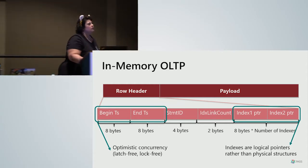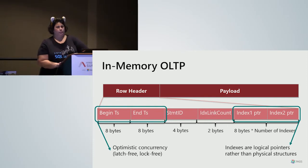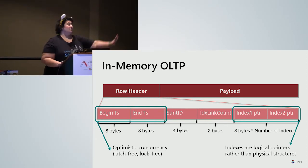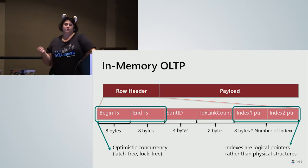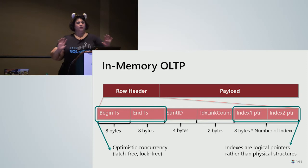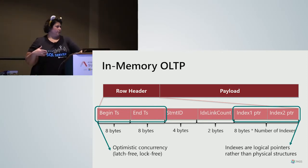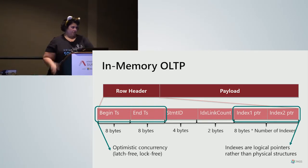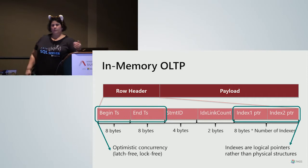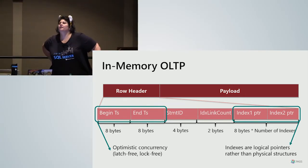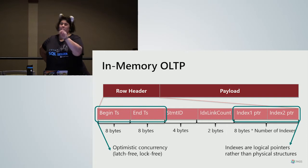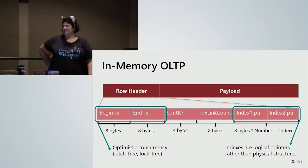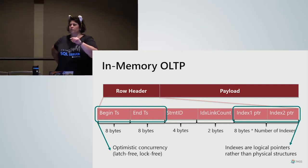The question about whether the entire database is in memory or only a portion: the way in-memory OLTP works is you create a memory-optimized filegroup in your database, and then you create memory-optimized tables. Only those memory-optimized tables will be in memory — it can operate alongside traditional disk-based data storage.